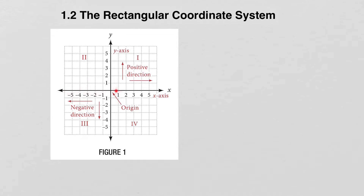The horizontal number line is usually referred to as the x-axis, and the vertical number line is called the y-axis. Those two lines divide up the plane into four areas called quadrants. The upper right area is the first quadrant, then quadrant 2, quadrant 3, and quadrant 4. The point in the middle is the origin, which corresponds to x equals 0 and y equals 0.